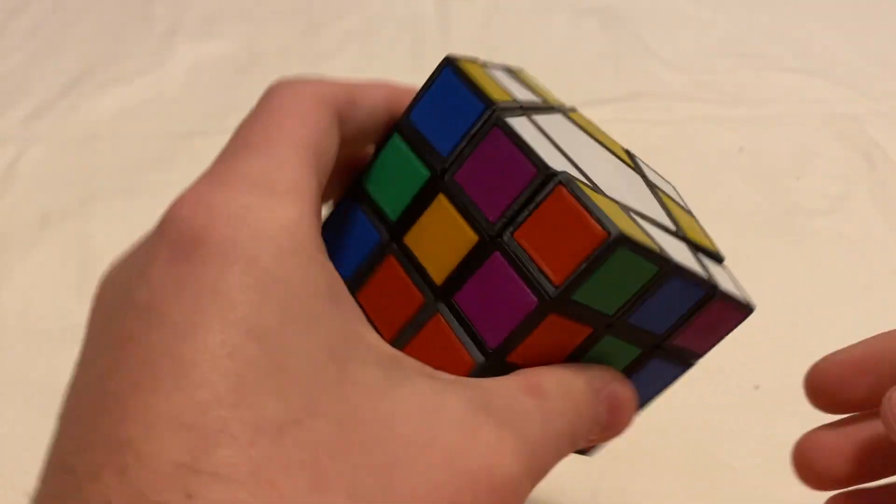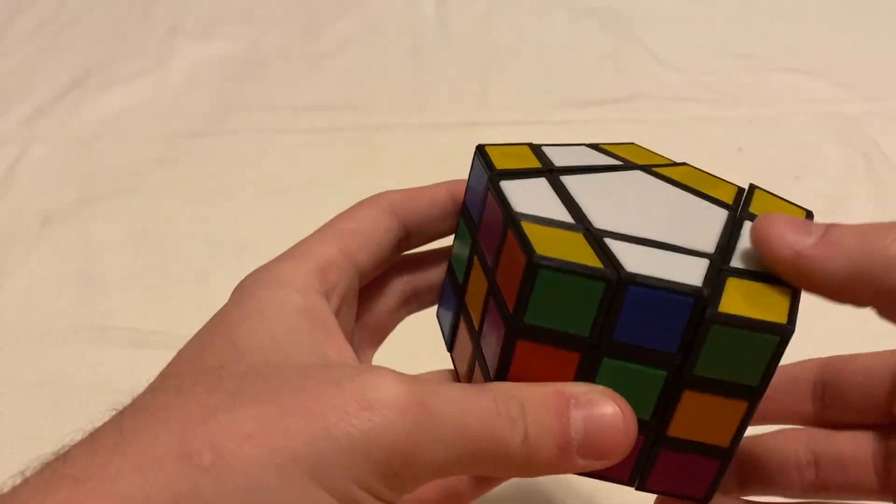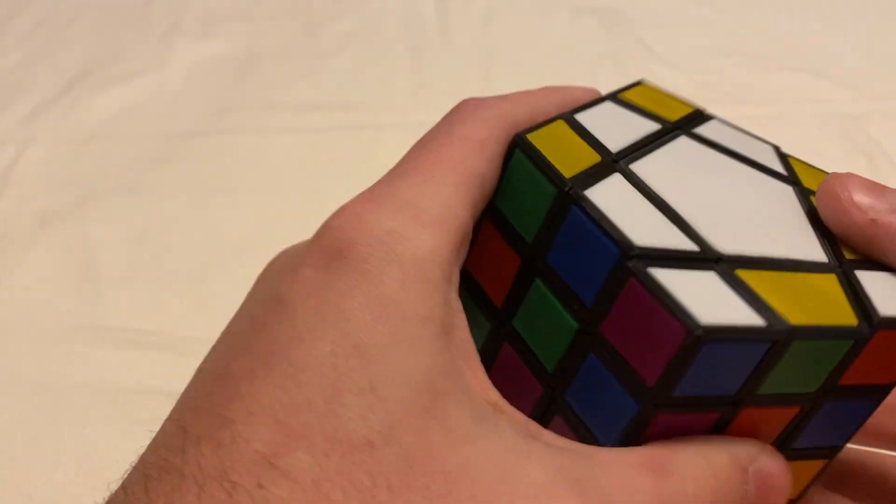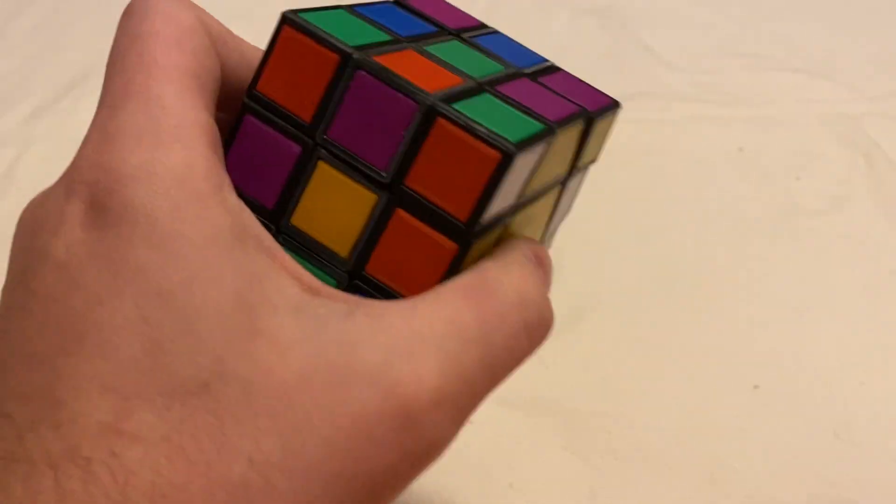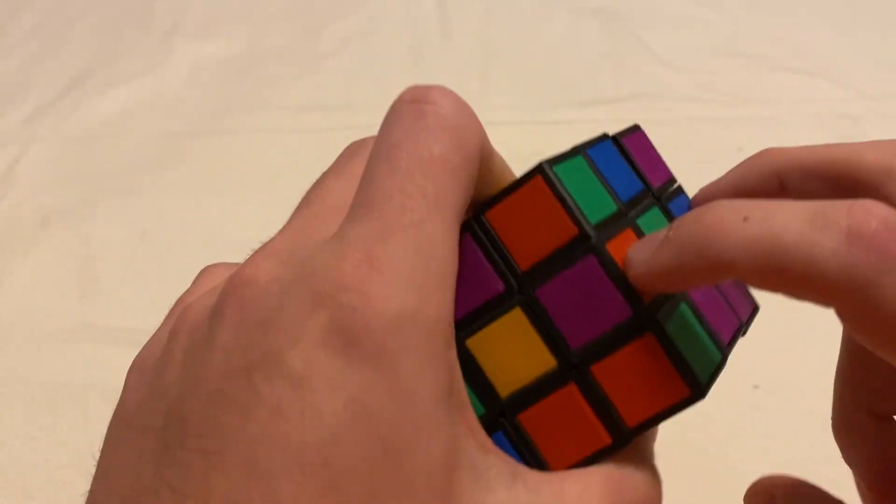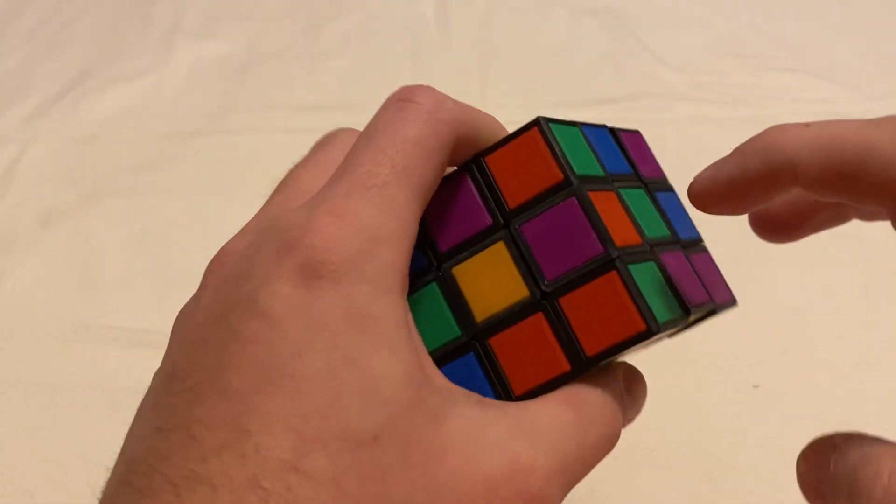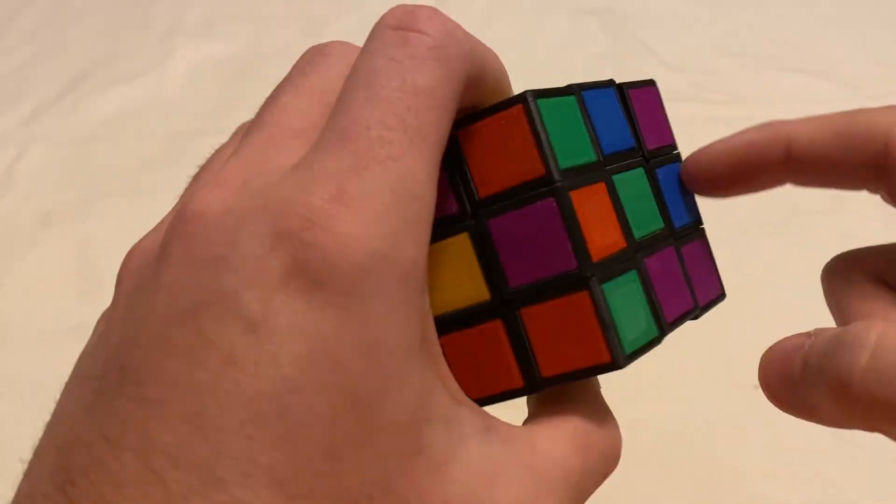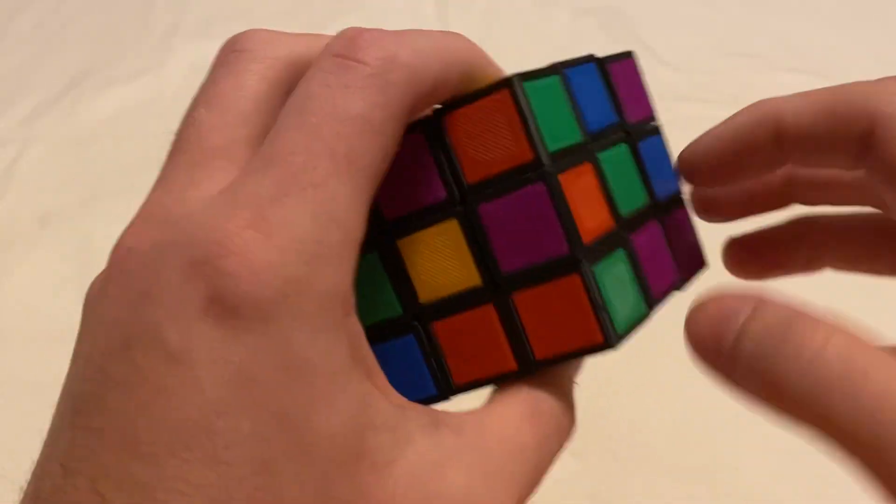So, due to the fact that this can only do half turns on the square faces, I actually solve it like a cuboid. So I solve the five square square edges first. So, the middle layer edges.